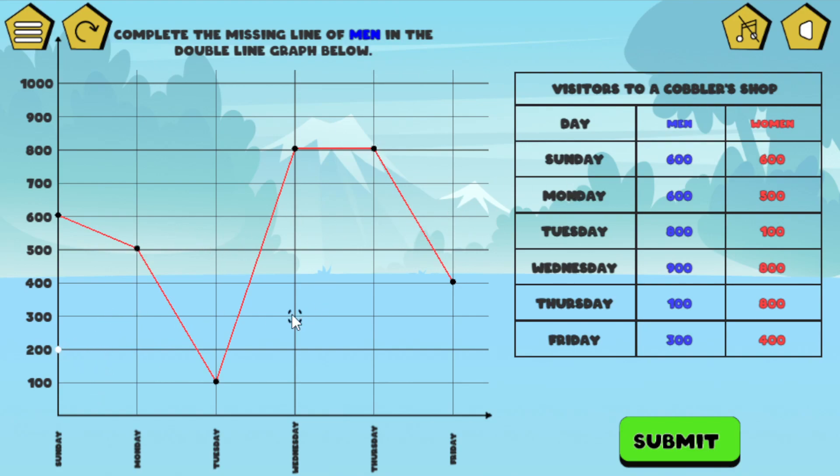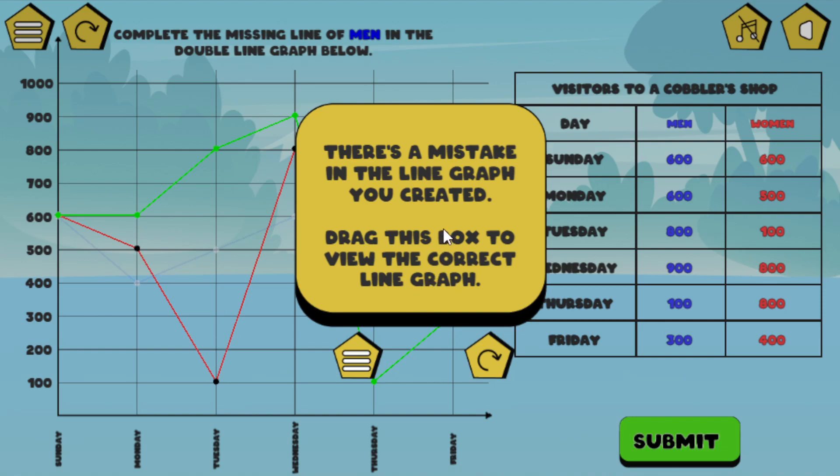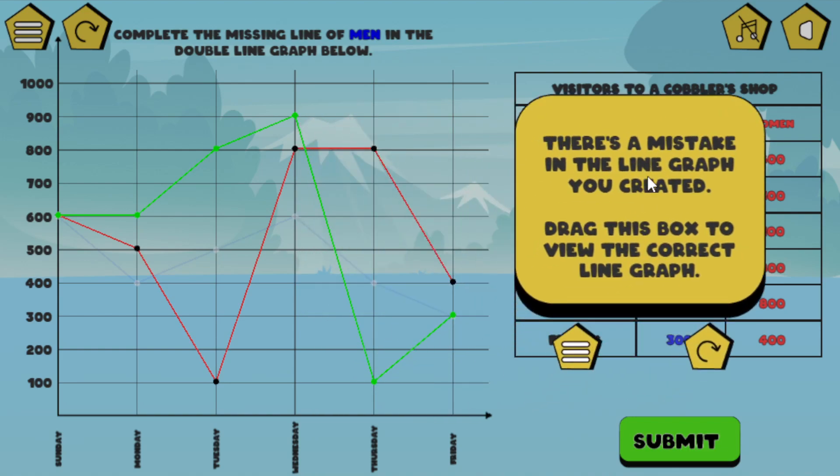So this one, let's just go ahead. I'm just going to click a bunch of random points. Actually, I will go ahead and Sunday is 600. And this is Sunday. 600 again. But let's go ahead and click some invalid points here. And click submit. Now I know it's right. The only one I know for a fact is right is 600. So this is incorrect, this line graph. And it says, there's a mistake in the line graph you created. Drag this box to view the correct line graph.